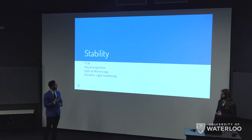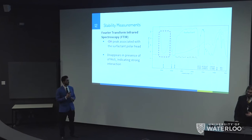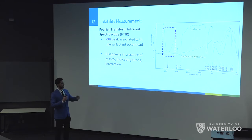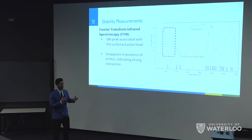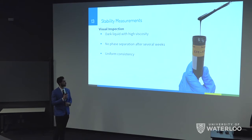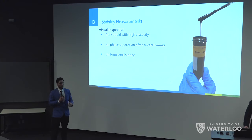To confirm the chemical functionalization, we performed FTIR on two samples: our surfactant alone and our surfactant with MoS₂. In the surfactant spectrum in green, there is a large peak in the purple region associated with the OH groups in the polar head of the surfactant. When MoS₂ is added, this peak disappears, indicating a strong interaction with the MoS₂ particles. On visual inspection, the MOLO concentrate appears as a dark liquid with high viscosity, and even after several weeks it still shows uniform consistency with minimal agglomeration.